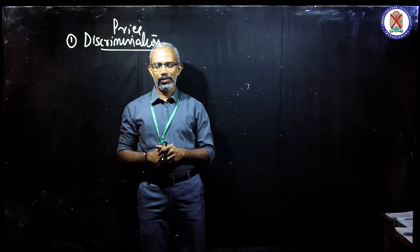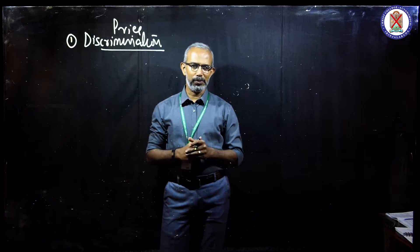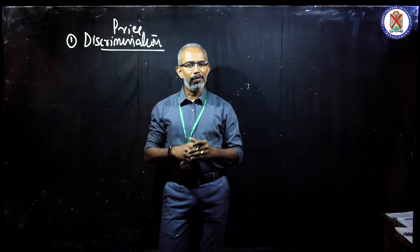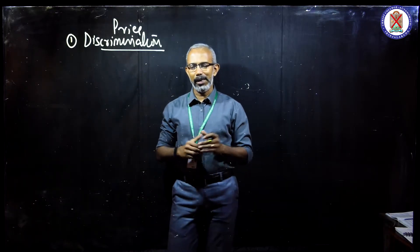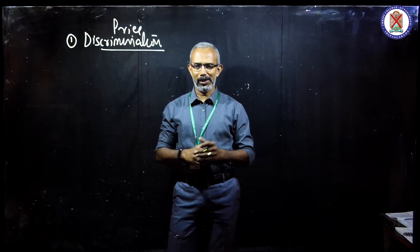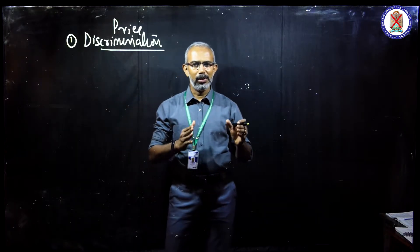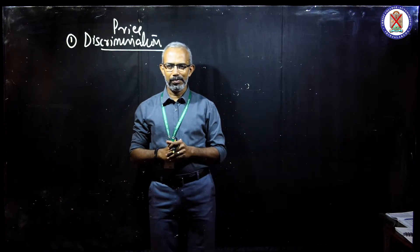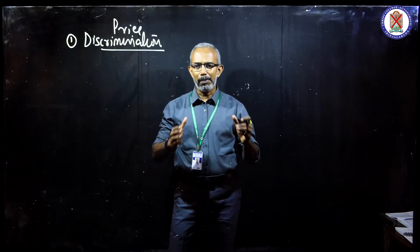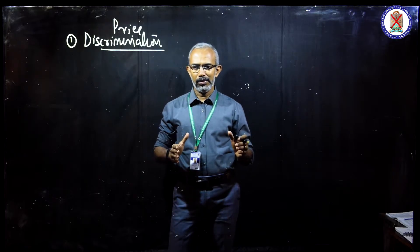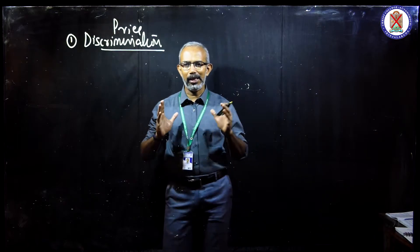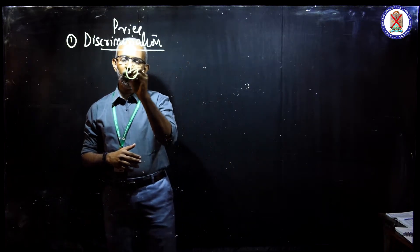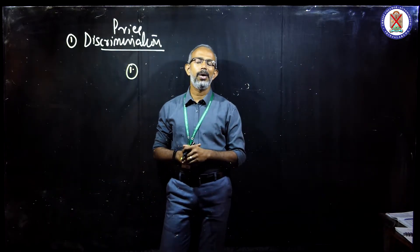Coming to price discrimination, this means that a manufacturer is able to provide two separate types of pricing to different sections for the same product at the same time. He sells the same product to two different sets of customers at different prices. Even though the price is different, the product remains the same and the time of sale is the same. Simply put, price discrimination means that the same product is sold at different prices to two different sets of customers at the same time. Now, how is price discrimination practiced? What are the different methods? There are six or seven methods of price discrimination, and we will try to understand them one by one.